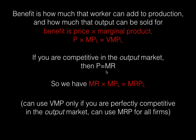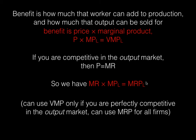Now, if you remember monopoly, price is not going to equal marginal revenue — it's going to be greater than marginal revenue. So I'm going to have to use marginal revenue product. The benefit of one more worker: I look at the marginal revenue of selling that extra output. That extra worker produces some output, and since I have to drop the price when I sell more output, I use marginal revenue times marginal product. Every firm, when looking at the benefit of one more worker, can always use marginal revenue product — how much does that worker add to production and what is changing in my revenue.